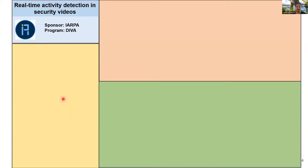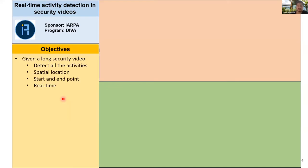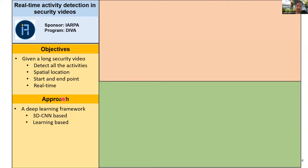I will start with real-time activity detection in videos. The idea is: if you have a long security video, can we detect all the activities happening in that video? The approach we have developed is a deep learning framework which is 3D convolution based. We are taking a two-step process and doing this in an online fashion, which means we don't have to see the future to detect any activity — we detect the activity as it is happening.